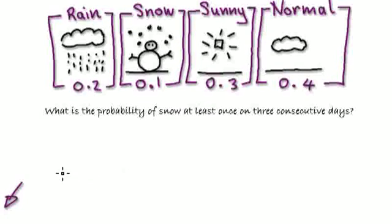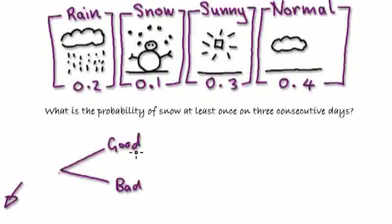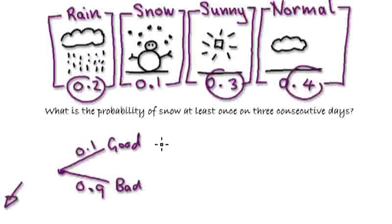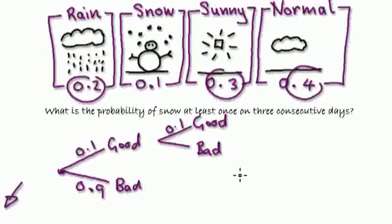Okay, so I'm going to merge the rain, the sun, and normal together and call it bad. So bad, good. The probability of it being good - so on my first day it could be a good day. Remember, good is defined as being snow. So 0.1 would be good. And the rest - 0.9. And then on the second day it could be a good day or it could be a bad day for my niece. So this would be bad, good here - good would be snow. And then down here it would be good, bad.